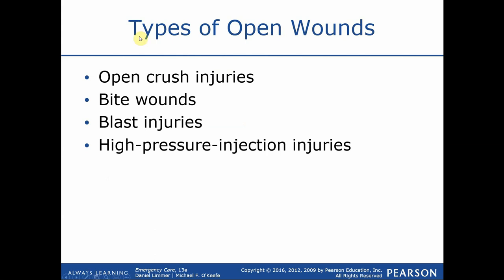Other types of open wounds include open crush injuries — the circumstances are no different than a closed injury. Bite wounds are a concern — not just the trauma and bleeding, but equally important is what bit them and what could have been transmitted. Was it a snake bite with venom? A dog bite raising concerns about rabies? Blast injuries can certainly open up the skin with the types of injuries we previously discussed.